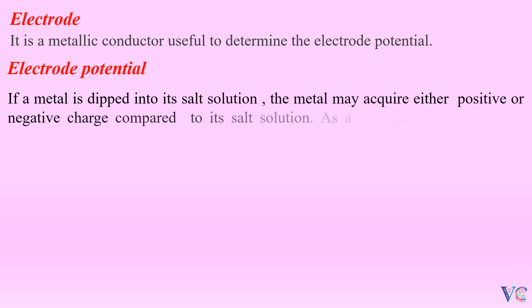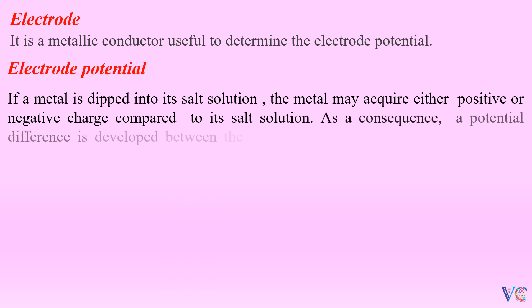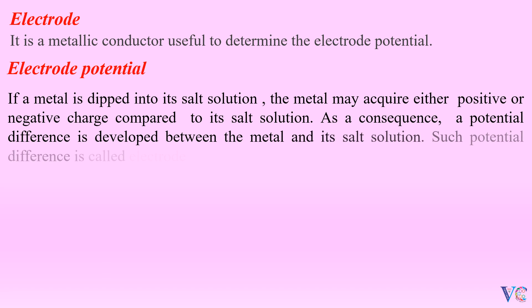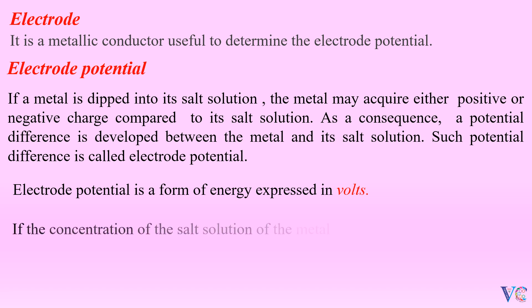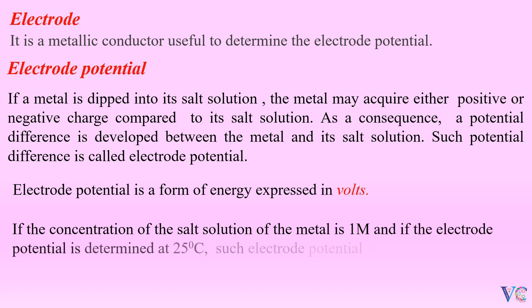As a consequence, a potential difference is developed between the metal and its salt solution. Such potential difference is called electrode potential. Electrode potential is a form of energy expressed in volts. If the concentration of the salt solution of the metal is 1 M, and the electrode potential is determined at 25 degrees centigrade, such electrode potential is called standard electrode potential.